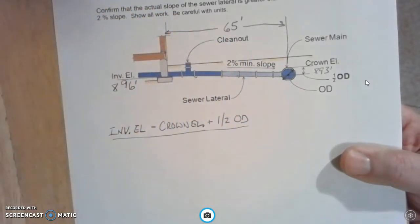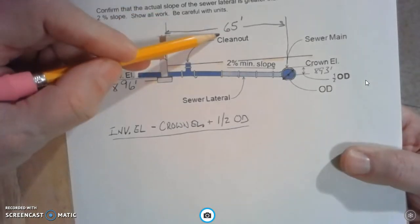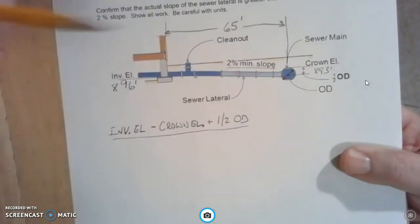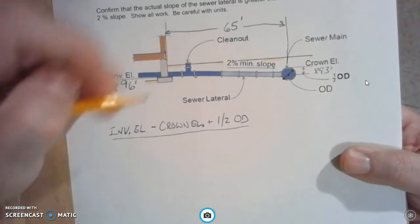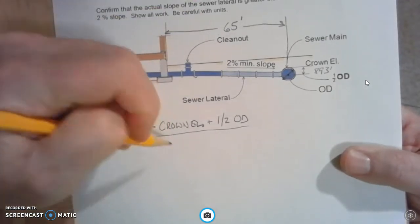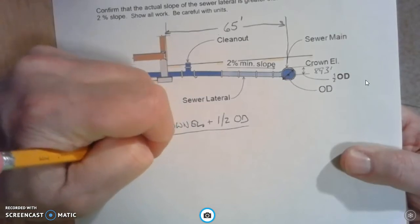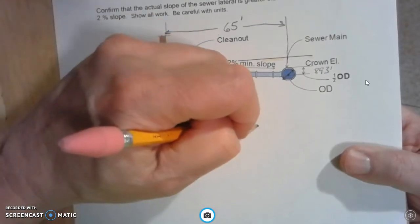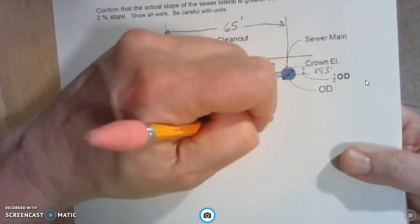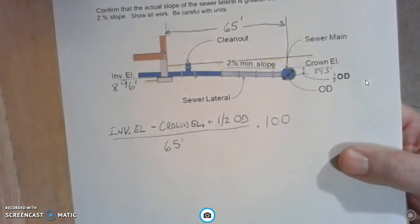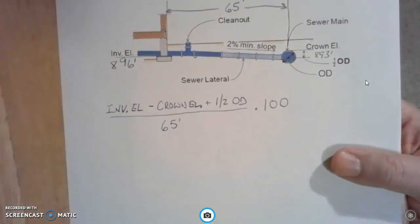And that's going to be divided by the distance we are from where the pipe exits the house to the center of our sewer main, which in this case it's told us is 65 feet. So I'm just going to put down 65 feet here, and then you need to multiply all of that times 100 to get the slope percentage.